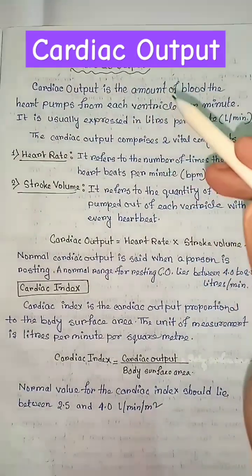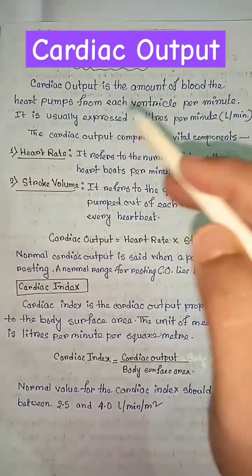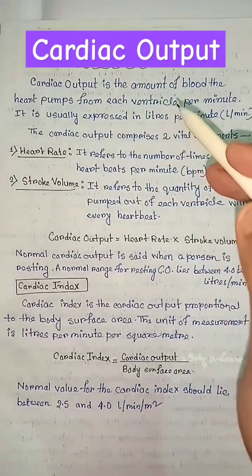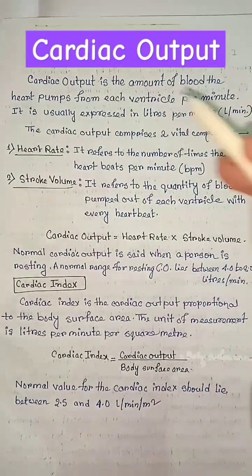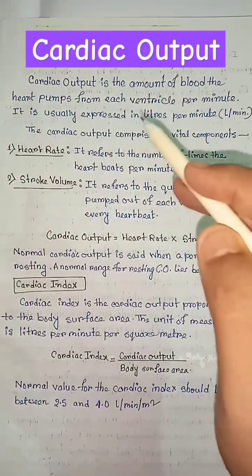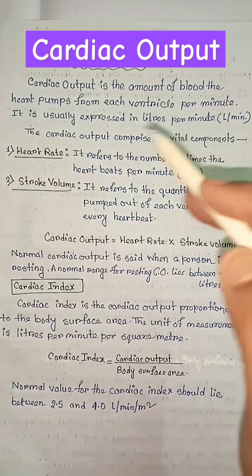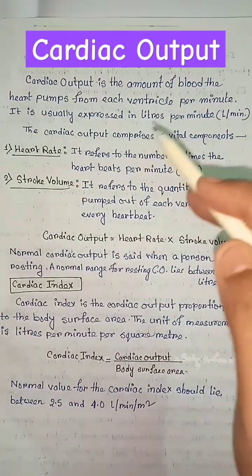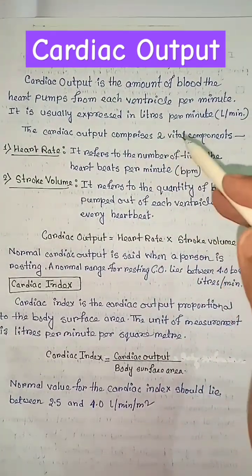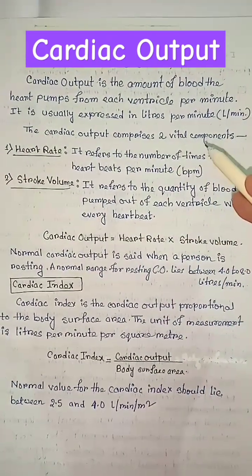What is cardiac output? Cardiac output is the amount of blood the heart pumps from each ventricle per minute. It is usually expressed in liters per minute.